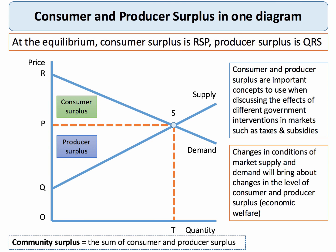The most important thing to revise is the idea of welfare. Consumer surplus is the area underneath the demand curve and above the price, shown in green there. Producer surplus is the area above the supply curve and below the price. Community surplus is the combined consumer and producer surplus — in this case, it will be area RSQ if there's a quantity T and a price P.